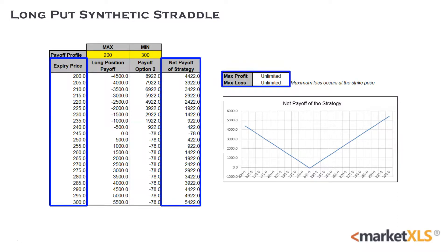Maximum loss occurs when markets don't move — specifically at the strike price itself. Maximum profits are unlimited in either direction of the market and they occur when the underlying asset moves significantly in a particular direction.